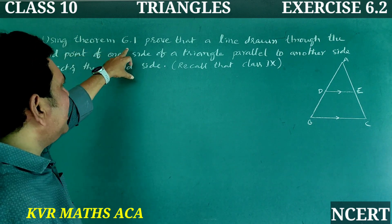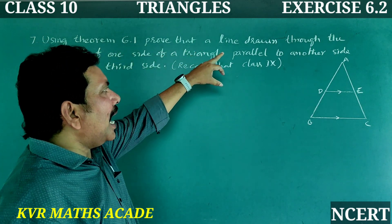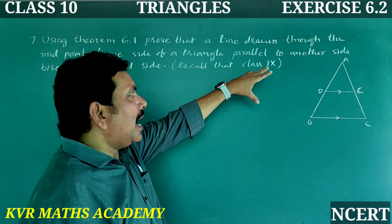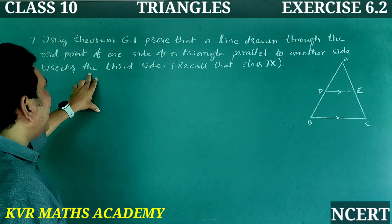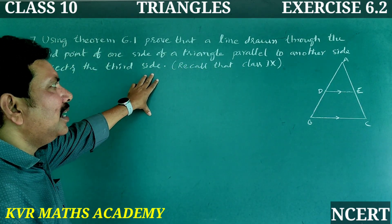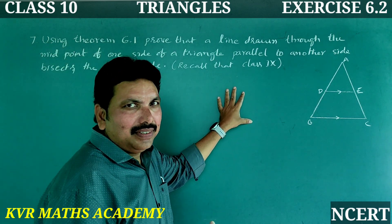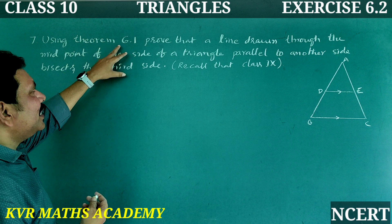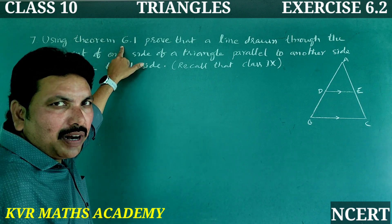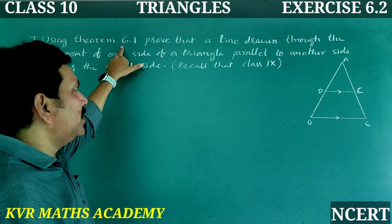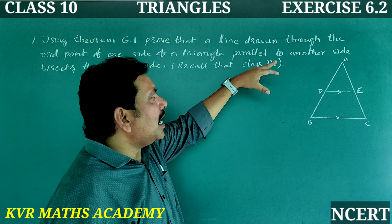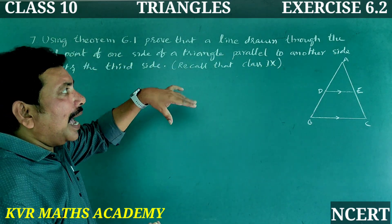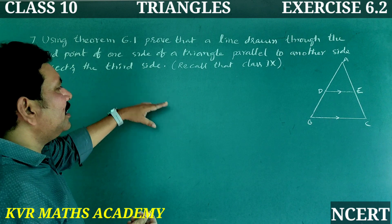7th question: Using Theorem 6.1 — the Basic Proportionality Theorem — prove that a line drawn through the midpoint of one side of a triangle, parallel to another side, bisects the third side. Recall that we already proved this in Class 9.